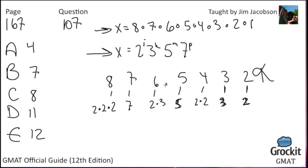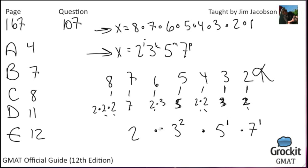Counting up: there is one 7, one 5, two 3s (from 3 and 6), and counting the 2s: 1 from 2, 2 from 4, 1 from 6, and 3 from 8 — that's 7 twos total. So x equals 2 to the 7th times 3 squared times 5 to the 1st times 7 to the 1st. Then i plus k plus m plus p equals 7 plus 2 plus 1 plus 1 equals 11, answer choice D.